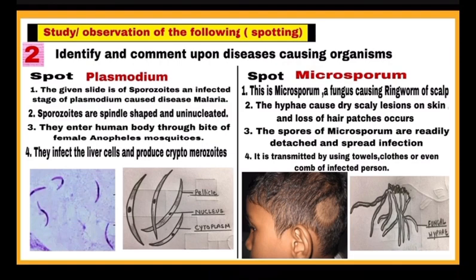Second spot in this category is Microsporum. Its slide will be shown to you along with a picture of the diseased person as given below. Point one: this is Microsporum, it is a fungus and it causes ringworm of the scalp. Point two: this causes dry scaly lesions on skin patches and hair loss — you can see the picture of a boy showing loss of hair in patches. Point three: the spores of Microsporum easily detach and spread infection. Point four: the infection is transmitted by using towels, clothes, or even the comb of an infected person. After writing these four points, draw the diagram of fungal hyphae with pencil as shown in the figure.